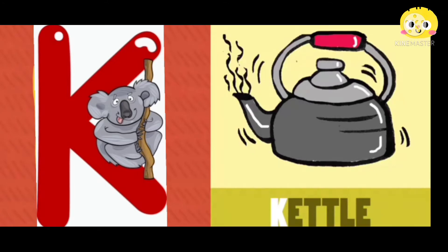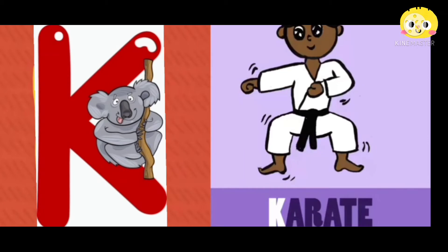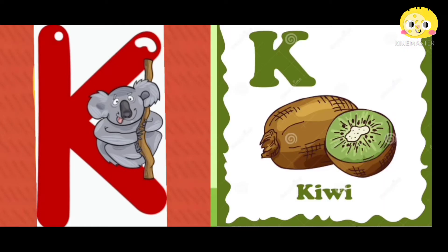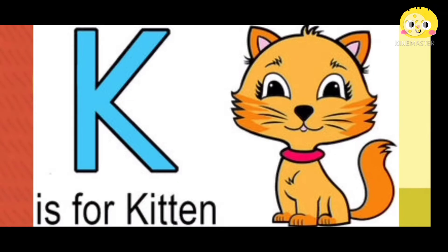K for kettle, yes children, repeat, K for kettle. K for karate, yes, K for karate. K for cake, yes children. K for kiwi, a fruit, K for kiwi. K is for kitten, K for kitten.